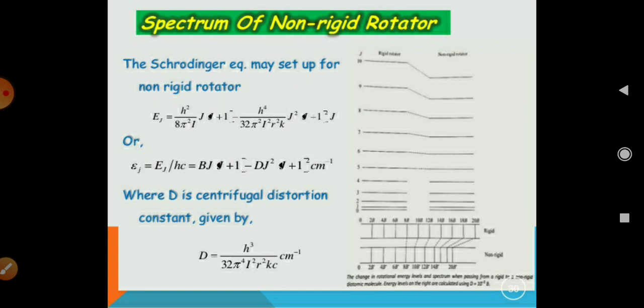So, by this equation, you will calculate the value of centrifugal distortion, which is D equals H cubed over 32 pi to the fourth I squared R squared KC centimeter inverse.